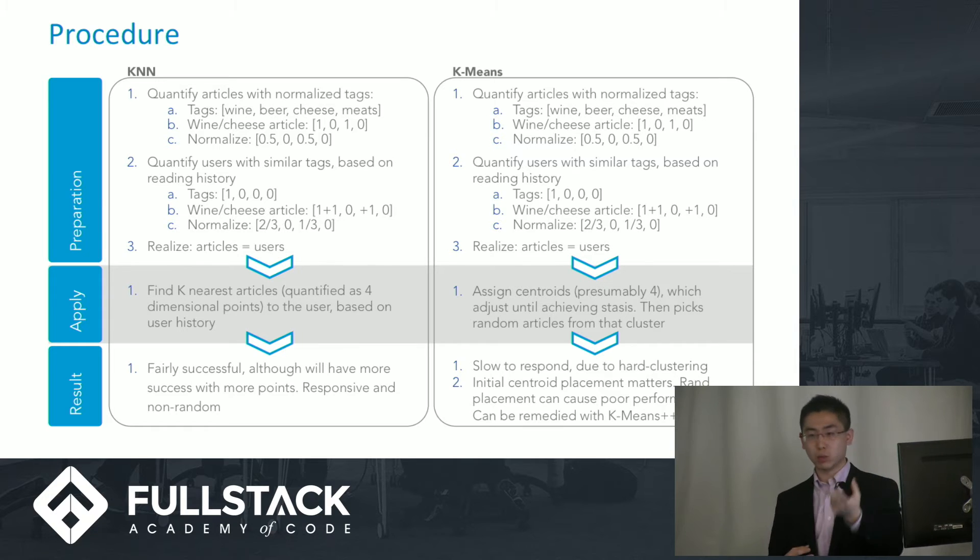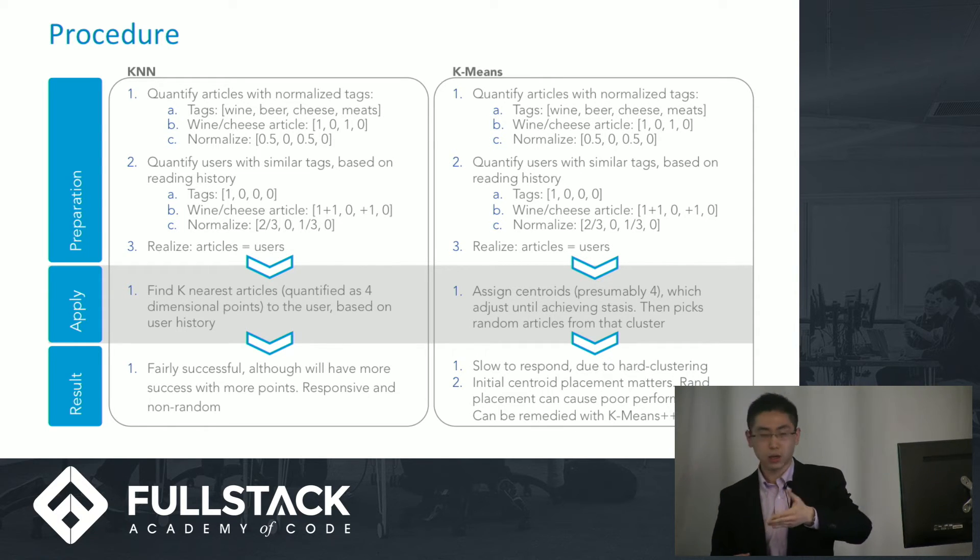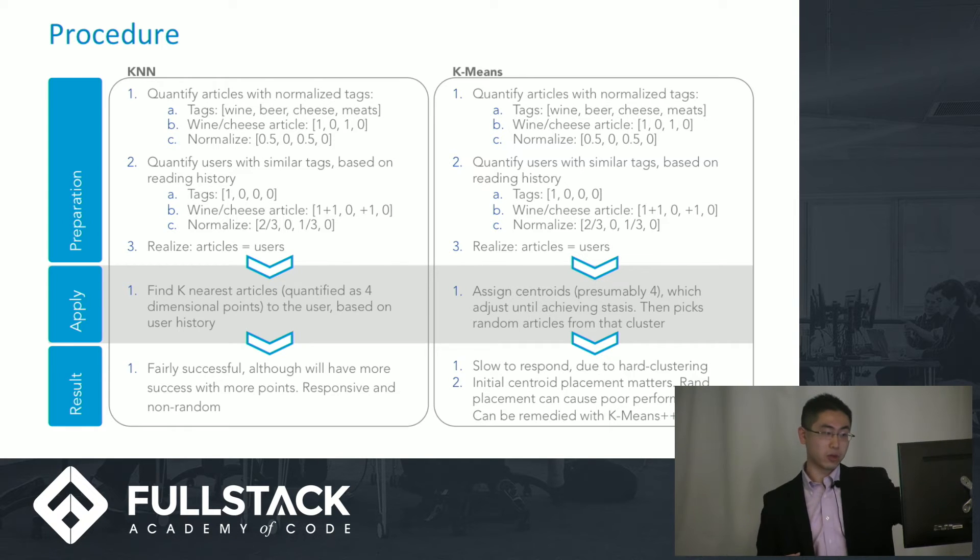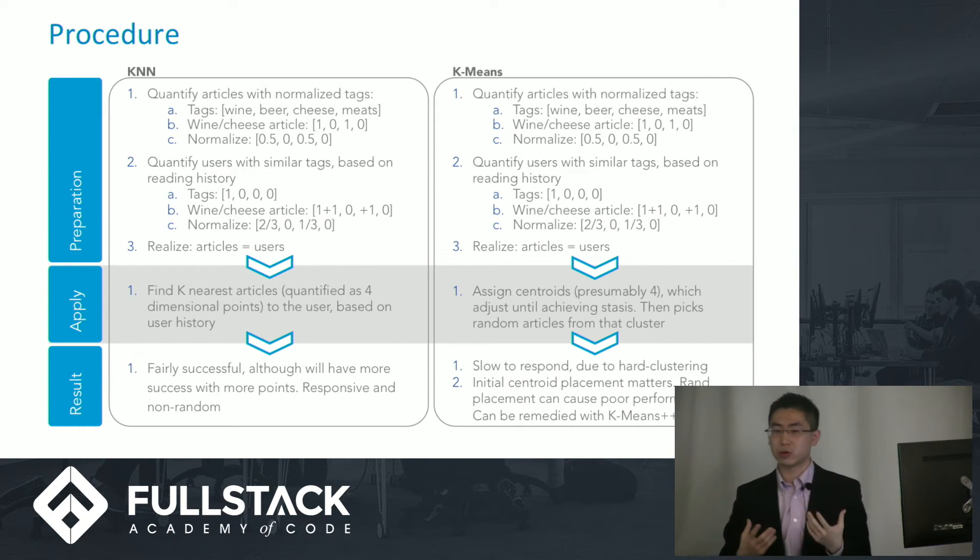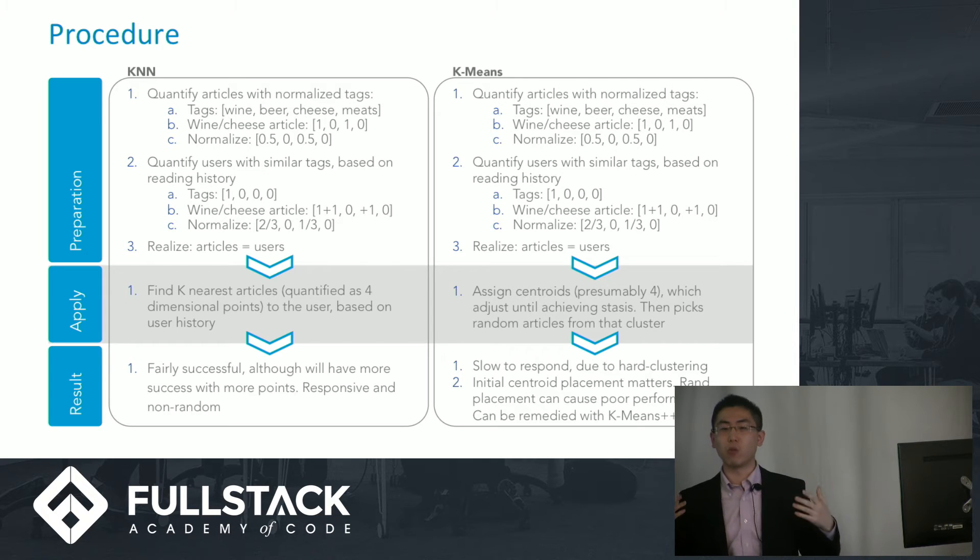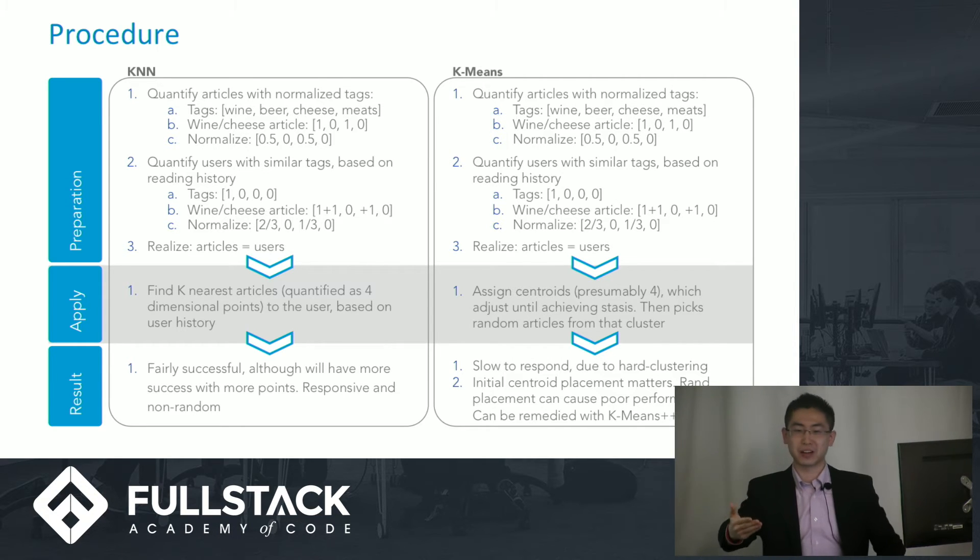If they read a wine and cheese article, that's two more tags. So add one to wine, add one to cheese. And so that'll give me two divided by three, and then one divided by three for the cheese index. And so that'll get me my user comparison to my articles. And so now you can see I'm sort of building this map of where exactly I can put my user in comparison to my articles.